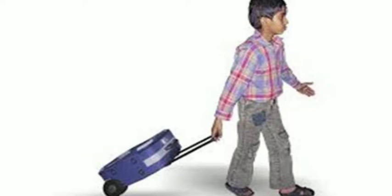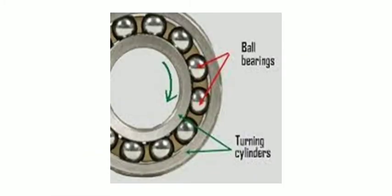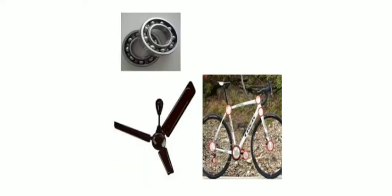Remember that rolling friction is smaller than sliding friction. In most machines, sliding is replaced by rolling through the use of ball bearings. Bearings reduce friction by providing smooth metal balls or rollers, and a smooth inner and outer metal surface for the balls to roll against. These balls or rollers bear the load, allowing the device to spin smoothly. Ball bearings are the most common type and are found in everyday objects such as skateboards, bicycles, the axles of ceiling fans, and other ball bearing applications.